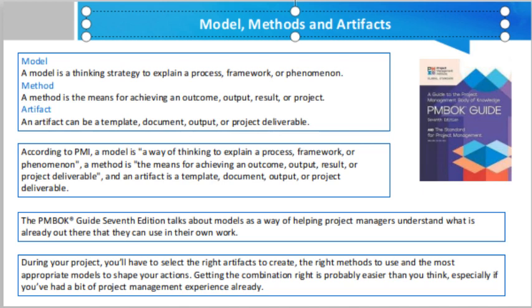We have taken this topic from PMBOK Guide 7. In simple terms, models, methods, and artifacts are the tools to get the job done. PMI describes them as options for enabling outcomes. A model is a thinking strategy to explain a process or framework of phenomena. A method is the means of achieving an outcome, output, result, or project deliverable. An artifact can be a template, document, output, or project deliverable. Models and methods are inputs that help us do the work of managing a project, while artifacts along with deliverables are the outputs.